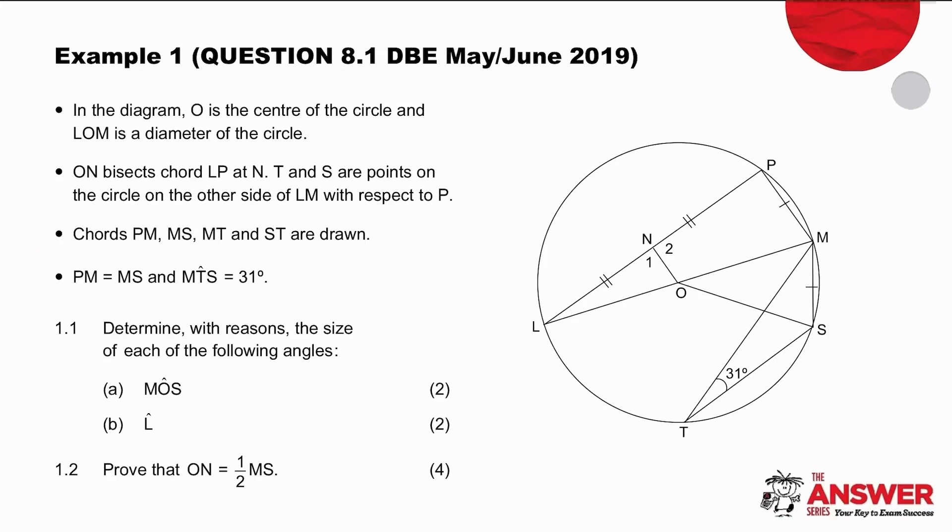In example one, we are going to start by processing the given information. O is the center of the circle. We know that LOM is the diameter of the circle. The diameter always obtends a right angle. We may or may not use that, but it's important to note it. They're telling us that we have another line, ON, which is a bisector of chord LP. So the line ON bisects the chord, and that means we know that we have right angles if we need them. PM equals MS. Very valuable information because equal chords subtend equal angles. So without even being asked to find this, we're noting for ourselves that those two angles are equal because they are being subtended by equal chords. Finally, we check that the angle that we are given of 31 degrees is actually indicated on the sketch. Now we are ready to answer the questions.